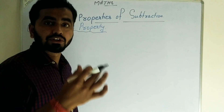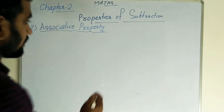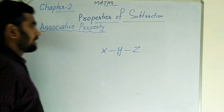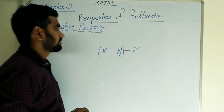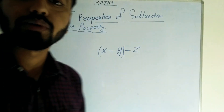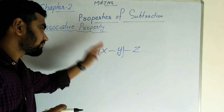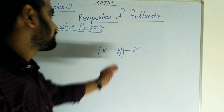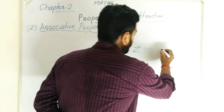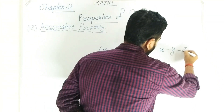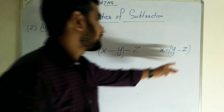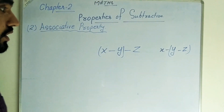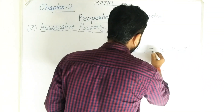Suppose that we have 3 rational numbers x, y, and z. In the first case, we use a bracket: x minus y, meaning y subtracted from x, and then we subtract z from that result. In the second case, x minus the bracket y minus z, meaning first subtract z from y, then subtract that result from x. Both results are not equal.